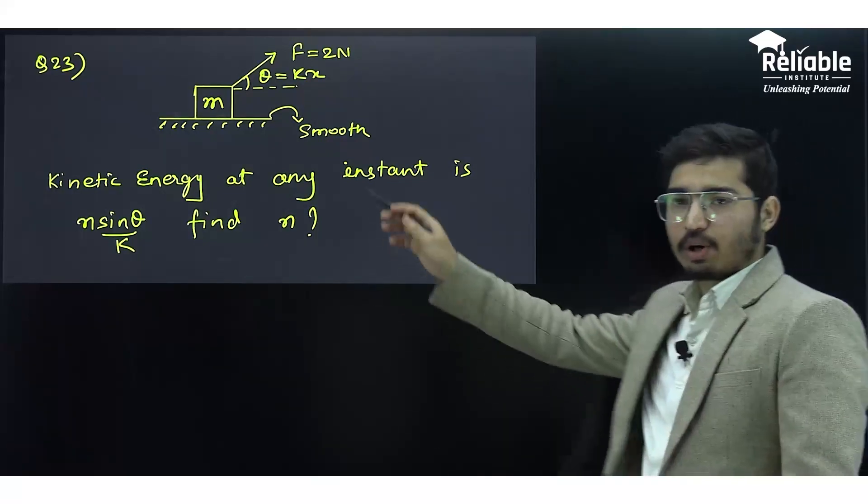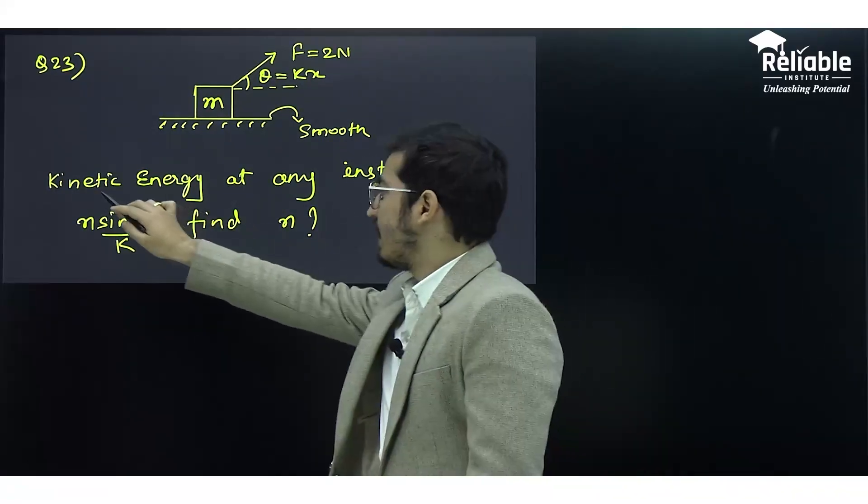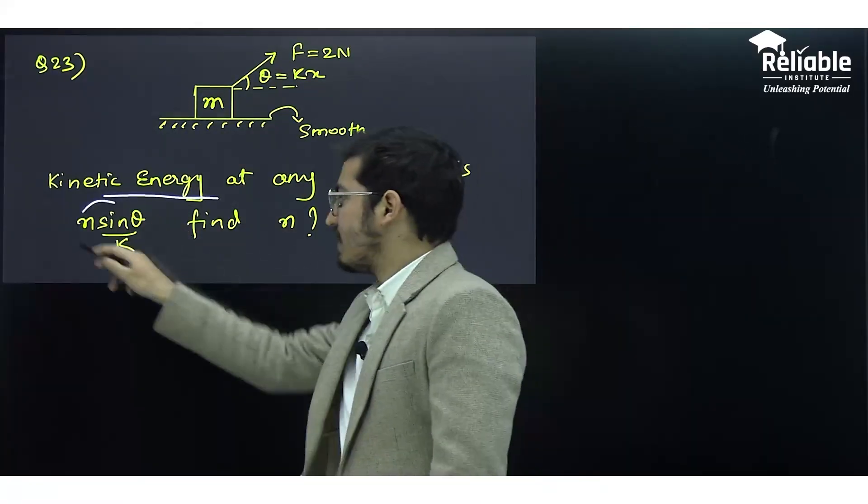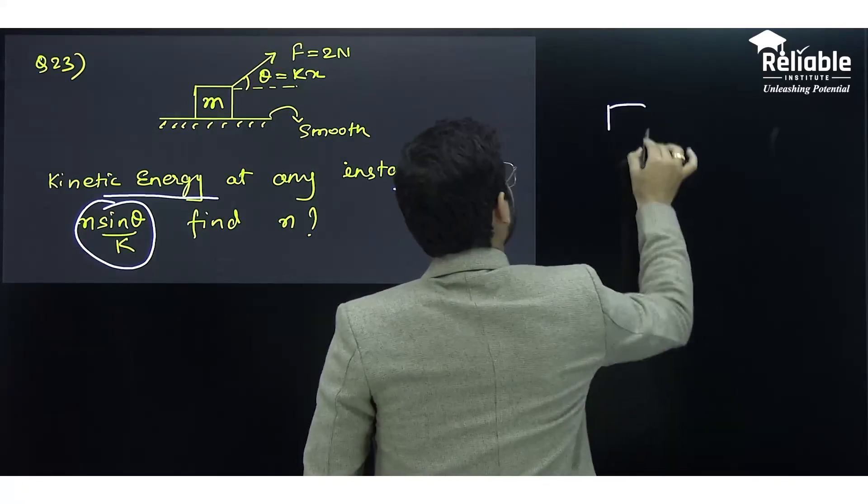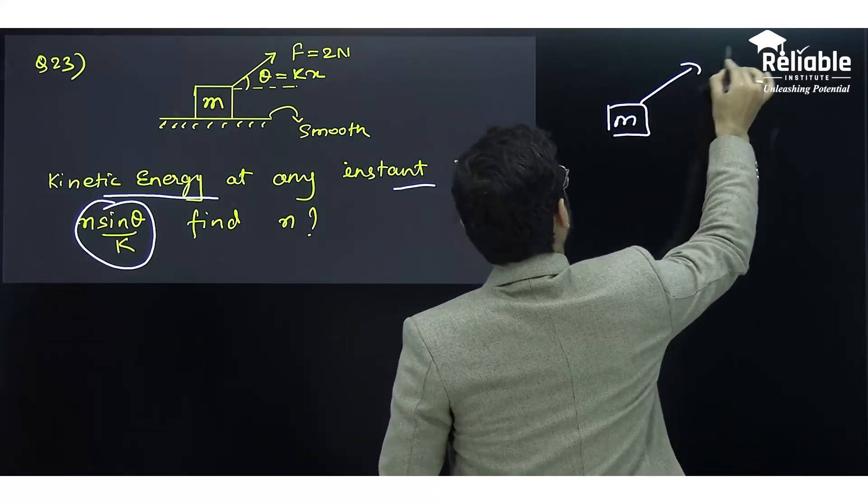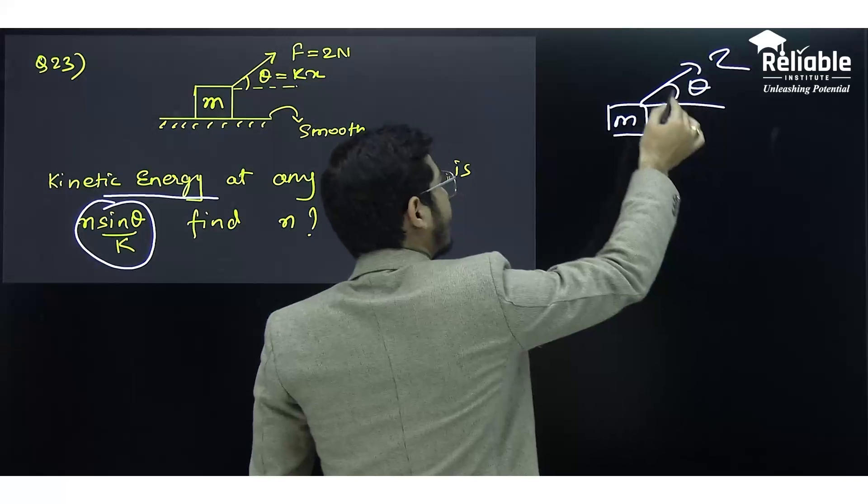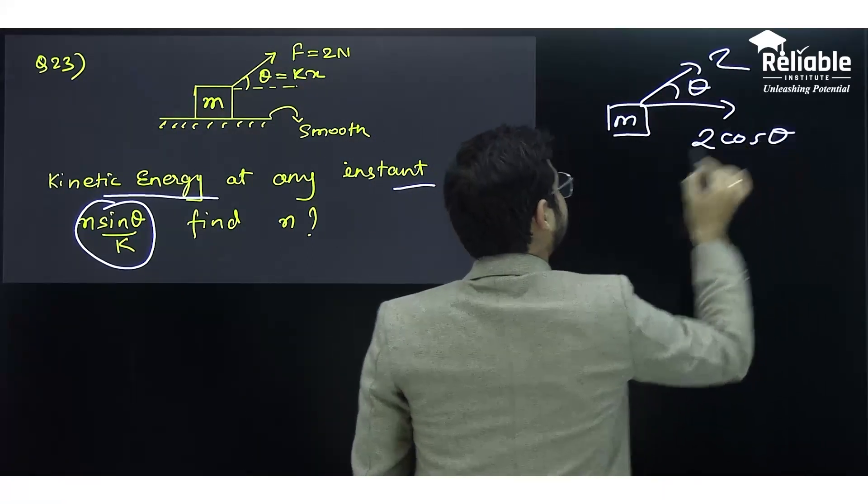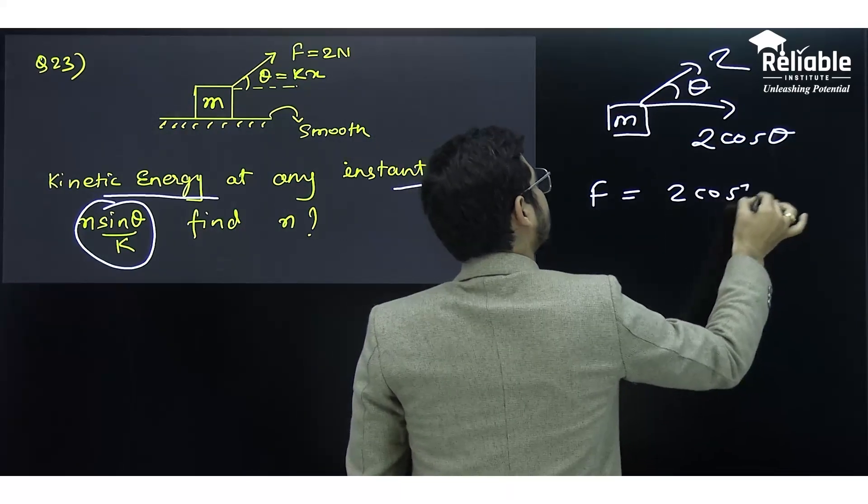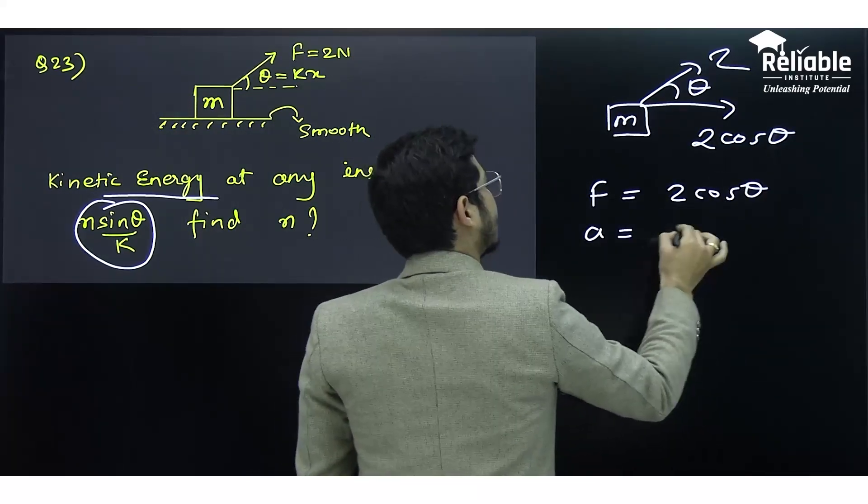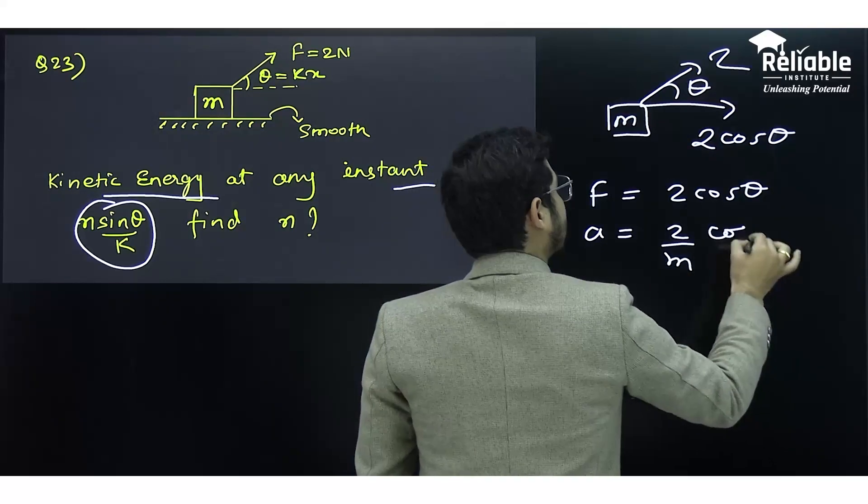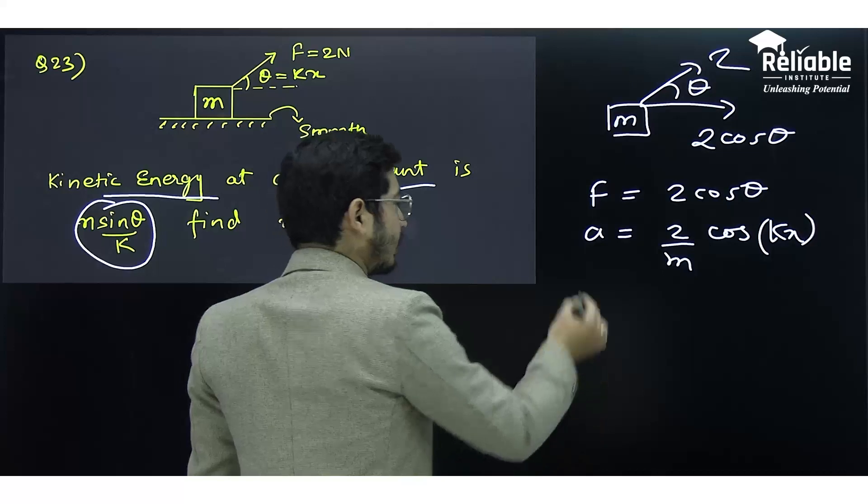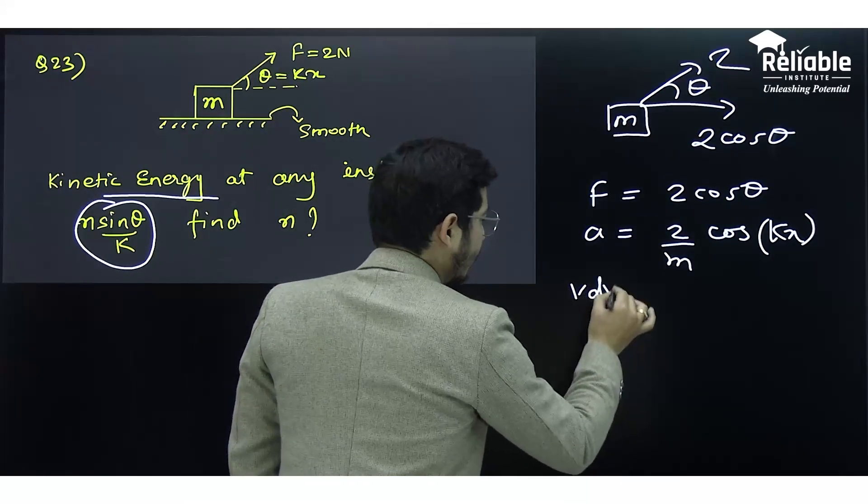Next question: a force is applied on a block with a smooth bottom surface. They are asking for kinetic energy at an instant in the format n sin(θ)/k. The block has mass m, a force of 2 newtons at angle θ. The component in the x direction is 2cos(θ), so acceleration is (2/m)cos(θ). θ is given as kx. Let us calculate velocity. Acceleration can be written as v(dv/dx).